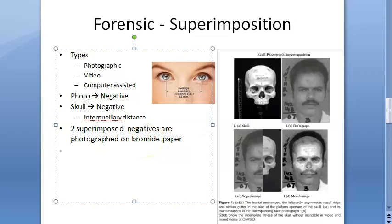The resulting superimposed photograph brings out points of similarity or dissimilarity. Superimposition is considered correct if the contours and size of the skull accurately correspond to the face in the photograph, allowing you to decide whether it is the same person.